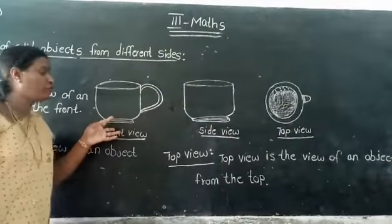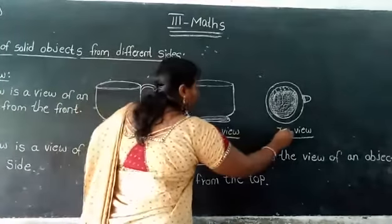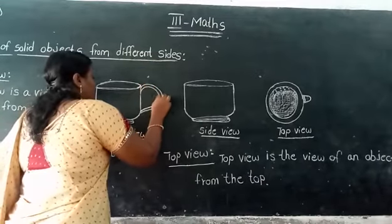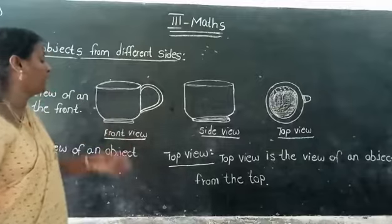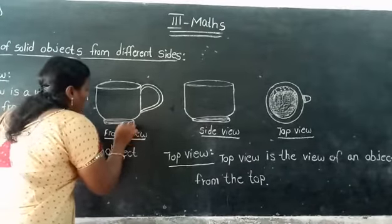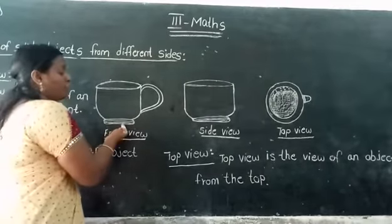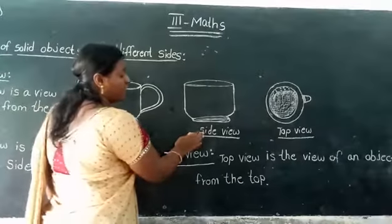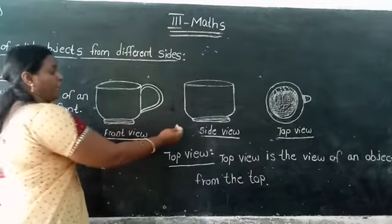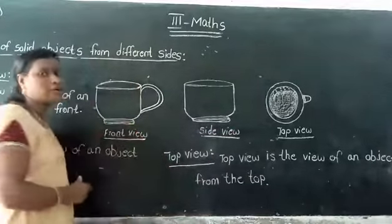This is the front view of the curve, this is the side view of the curve, and this is the top view of the curve. We are seeing different shapes, but the shape cannot change — it depends on its position. We are seeing the front view, the side view, and the top view, all depending on position.